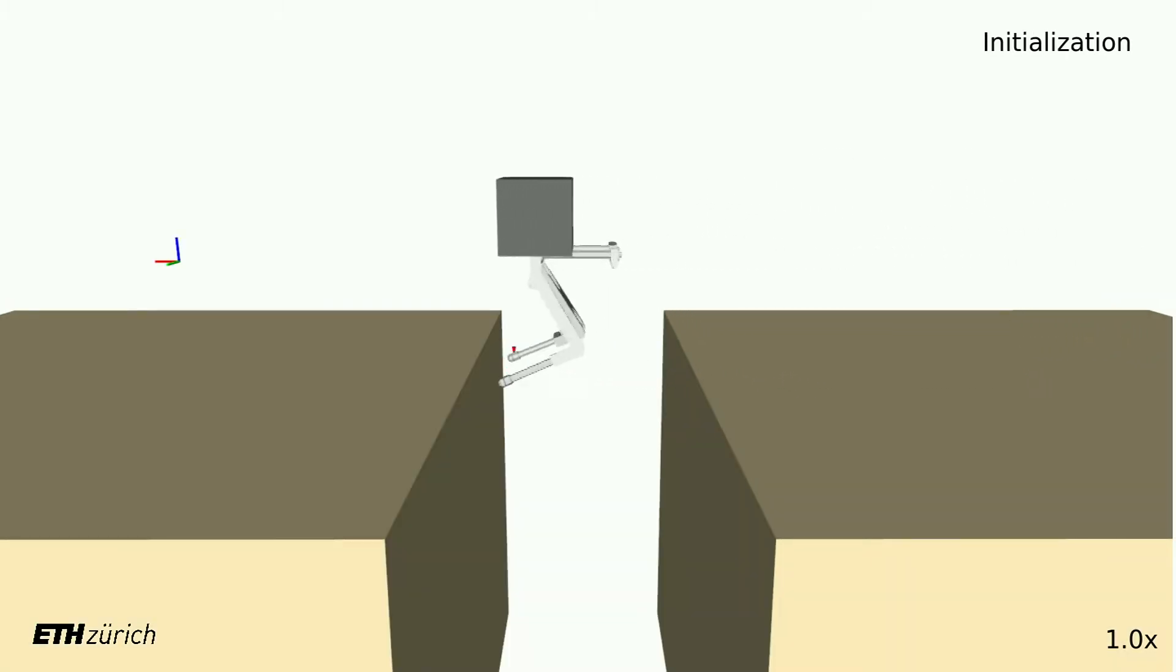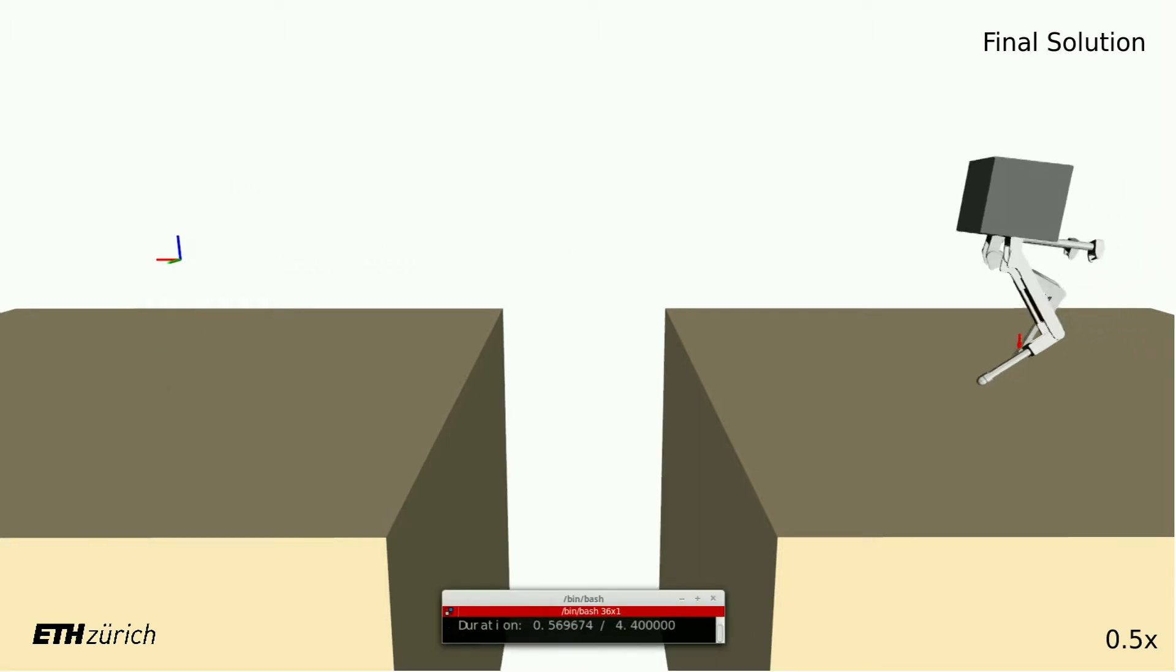It automatically determines the most suitable gait and stepping durations in order to reach a given goal state. Our novel way of parameterizing the NLP allows to generate these motions very efficiently compared to other approaches.